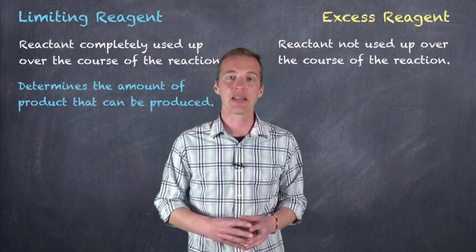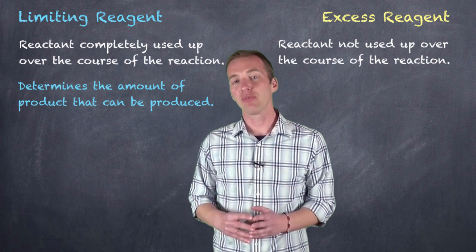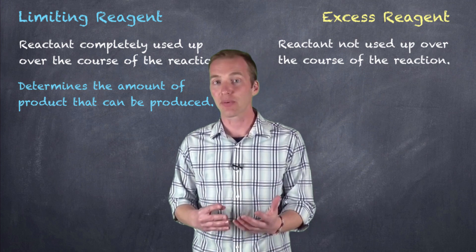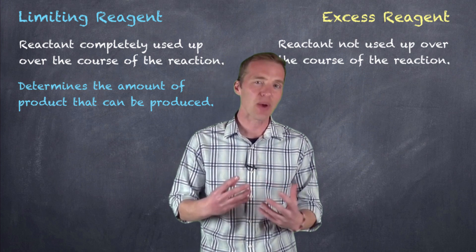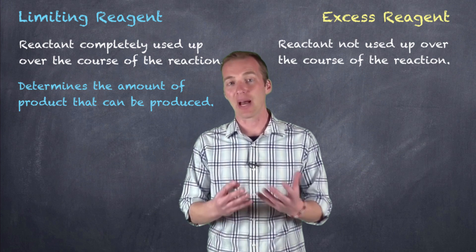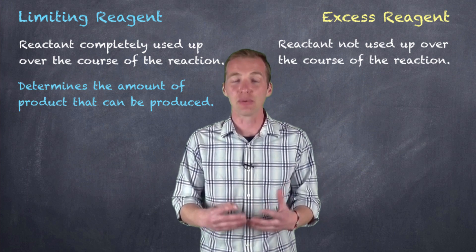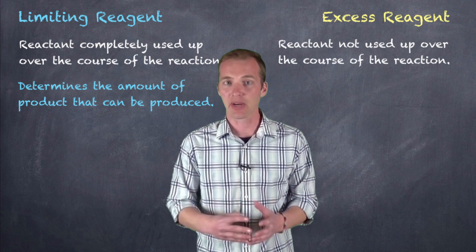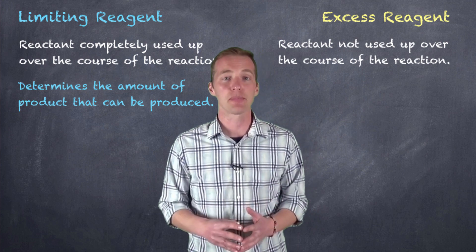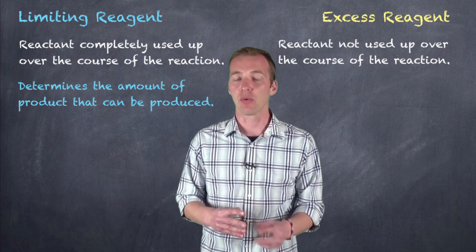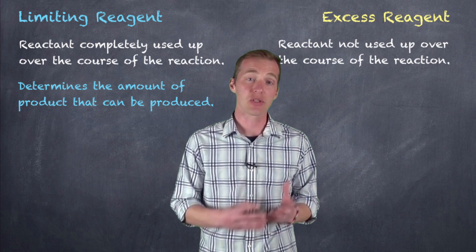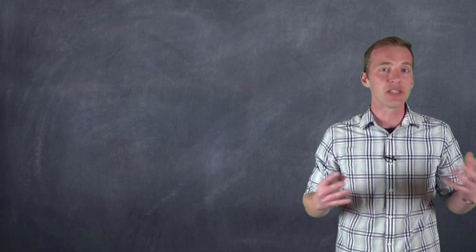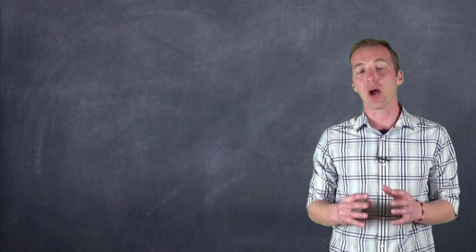The limiting reactant or limiting reagent is what determines how much product can be produced — it's almost like the weak link in the process. Now, it is important to note that you can have both reactants, or all of the reactants, being the limiting reactant. That is, you can have correct stoichiometric ratios that match the balanced chemical equation, giving both values as limiting. Alternatively, you could have two limiting reactants if there were three, and so on. But for most of our purposes, we're just going to look at a scenario where we have two reactants — one limiting and one excess.